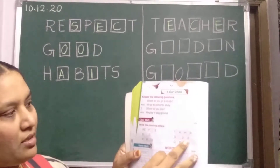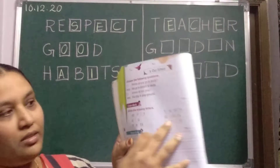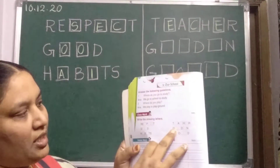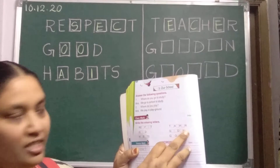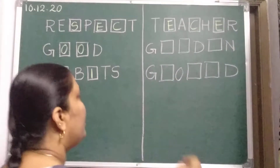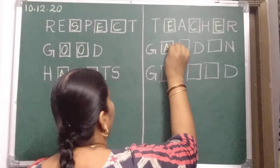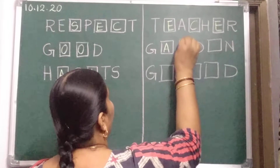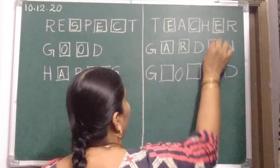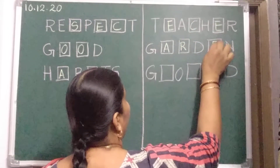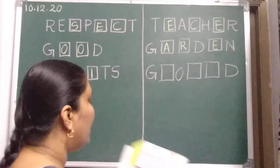Next, this is what? G, dash, dash, D, dash, N. Garden. G, A, R, D, E, N. Garden.